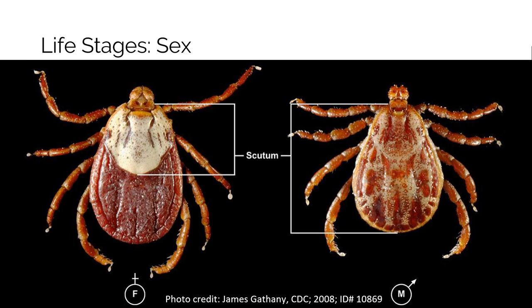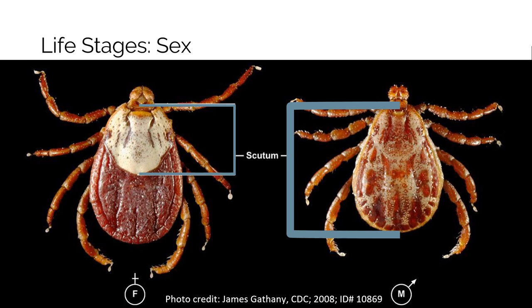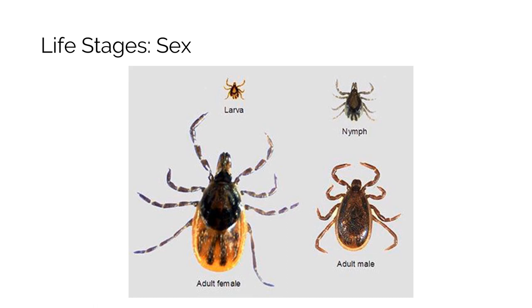Beyond size differences, the amount of body covered by the scutum is used to differentiate between male and female adult ticks. The female scutum only covers a small part of the top, or the dorsal surface, of the tick, which enables the abdomen of the female to expand during feeding. Males have a scutum that extends the whole length of their body. It is not possible to determine the sex of a nymphal or larval tick through visual means, as all nymphal and larval ticks have a scutum that only covers a part of the dorsal surface. Sometimes it can be hard to differentiate between an adult female and a nymphal tick just based on a photo; this will be covered in detail in Module 4.